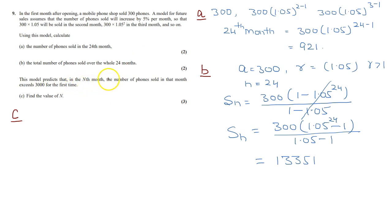The model predicts that in the nth month, the number of phones sold in that month exceeds 3000 for the first time. What is the value of n? Suppose this is a particular month, say this is the nth month. So that is a times r to the power n minus 1 will be greater than 3000. So a is 300, r is 1.05 to the power n minus 1 is greater than 3000. So 1.05 to the power n minus 1 is greater than 10.